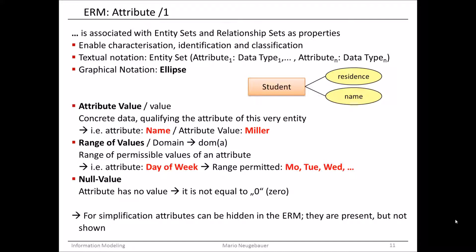We heard already about attributes, and here is now the graphical representation of the attribute. You can see on the right side two ellipses — the first one is written with 'residence,' the second one is 'name.' This means that the entity set 'student' has two attributes: one attribute named 'residence' and the other named 'name.' The student is described in detail with these two attributes.